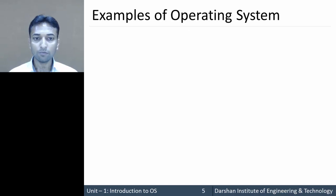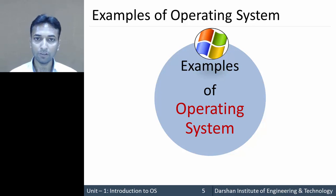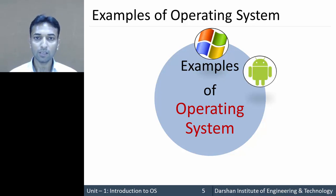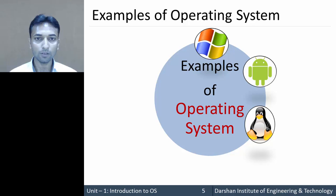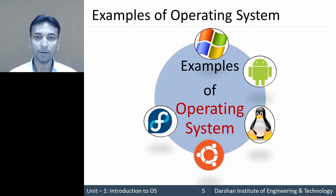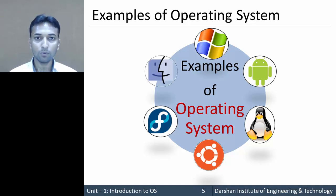Now let us look at examples of various operating systems. The first one is Windows, which we are already using in our laptops and computers. The second one is Android, which we use in our mobile devices. The third one is Linux, which we also use in laptops or computers — Ubuntu and Fedora are different types of Linux-based operating systems. Then there is Mac OS, which is used on Apple computers. So these are the different types of operating systems that we use daily.